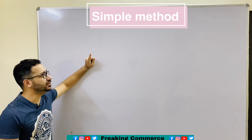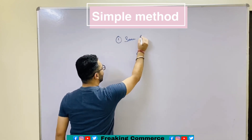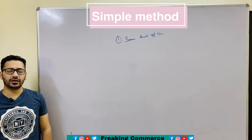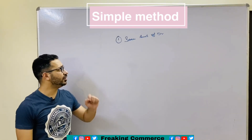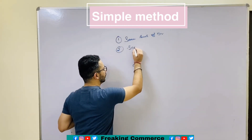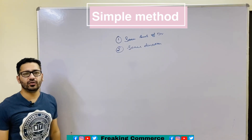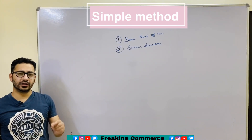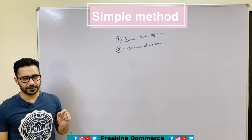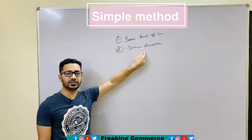The first condition is same amount of drawing — that is, whenever any partner withdraws any amount from the business, it should always be the same. The second condition is same duration — that is, whenever any partner withdraws any amount, there should be a same specified duration. For example, if he withdrew on the first of every month, then the second condition is fulfilled.